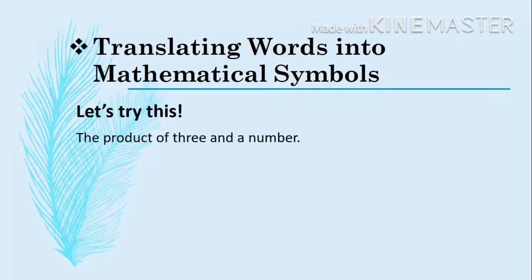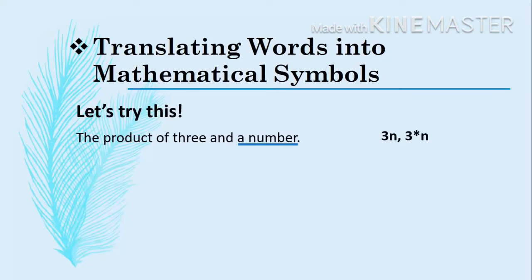For the first one, we have 'the product of 3 and a number.' Let's translate this — we get 3n, or 3 multiplied by n. We have the word 'product,' so we use multiplication. We have the number 3, and 'a number' wherein we can use any letter from the English alphabet. That's why this is the resulting mathematical expression.